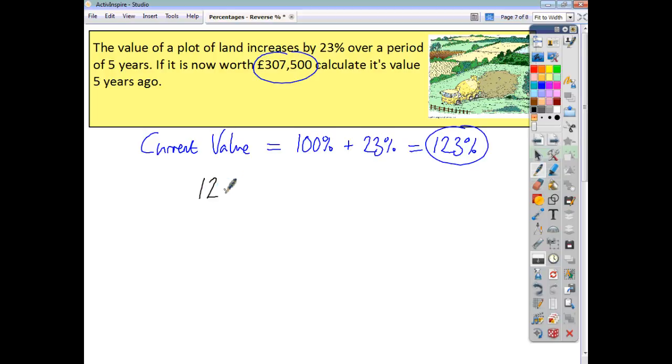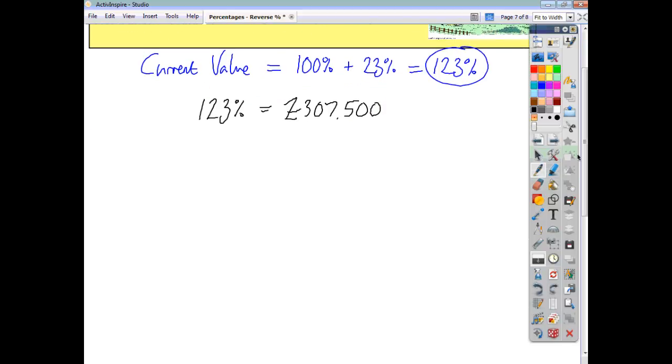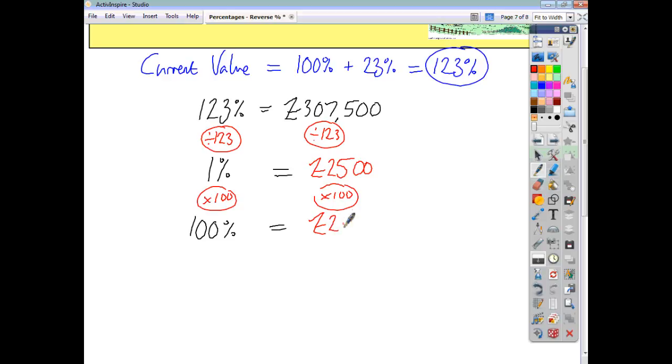We know that this 123% is what we're talking about here. So say what you know. You know that 123% is equal to £307,500. You then want to find 1%, and lastly you want to find 100%. Now, divide both sides by 123, because 123 divided by itself is 1, and that gives us £2,500. Now, to go from 1 to 100, we just multiply by 100. And we find then that the original price paid for the land was £250,000.